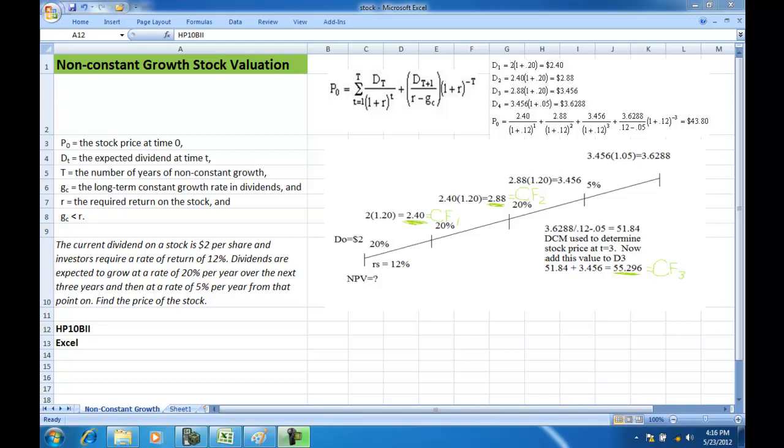Now no calculator will allow me, or even Excel, to put two numbers in for one cash flow. So what I do in essence is add the $51.84 plus the $3.456. Not the $3.6288 but the $3.456, and get a CF3 of $55.296.